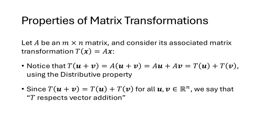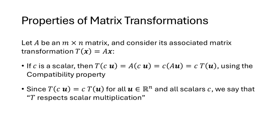When we have a matrix transformation T, T(u + v) equals A(u + v), which equals Au + Av, and that equals T(u) + T(v). So the property that T(u + v) equals T(u) + T(v) — when T is a matrix transformation — we call that T respecting vector addition; T interacts nicely with the vector addition operation. Similarly, if T is a matrix transformation where T(x) = Ax, then T(cu) equals c times T(u), and we call this T respecting scalar multiplication.